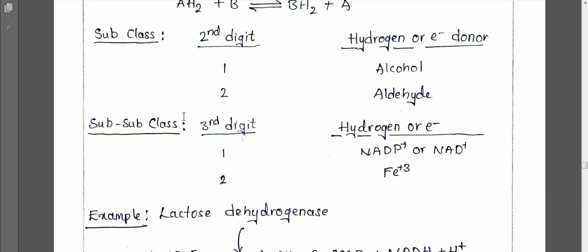The third digit, the sub-subclass, indicates the acceptor of the hydrogen or electrons. If it is 1.1.1, the acceptor is NAD+ or NADP+. If it is 1.1.2, the acceptor is Fe3+ molecule.